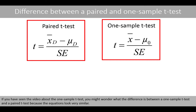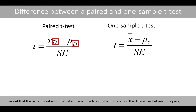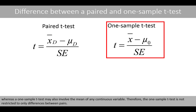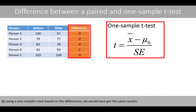If you have seen the video about the one-sample t-test, you might wonder what the difference is between the one-sample t-test and the paired t-test, because the equations look very similar. It turns out that the paired t-test is simply the one-sample t-test applied to the differences within the pairs, whereas a one-sample t-test may also involve the mean of any continuous variable. Therefore, the one-sample t-test is not restricted to only differences between pairs. By using a one-sample t-test based on the differences, would you get the same results?